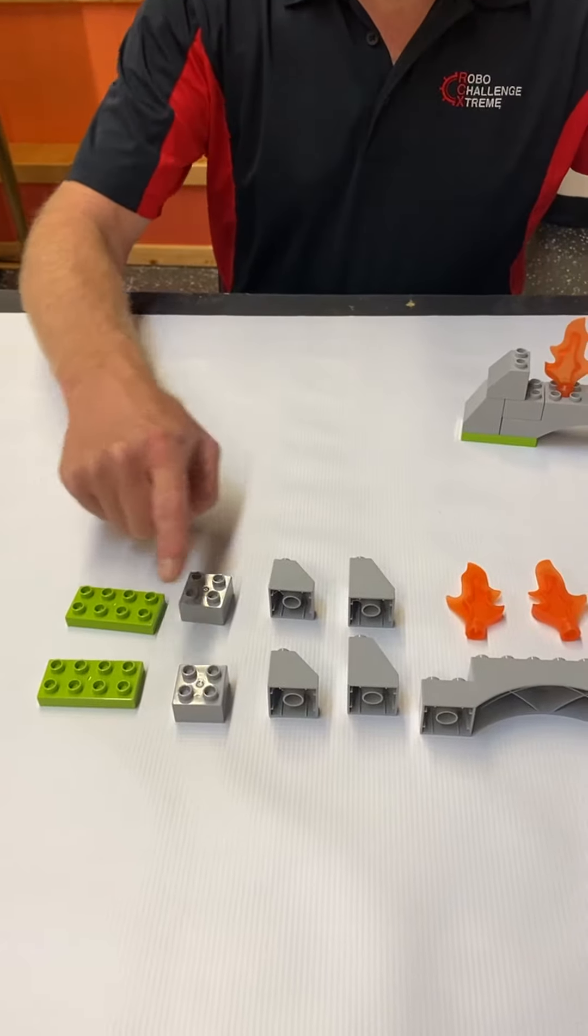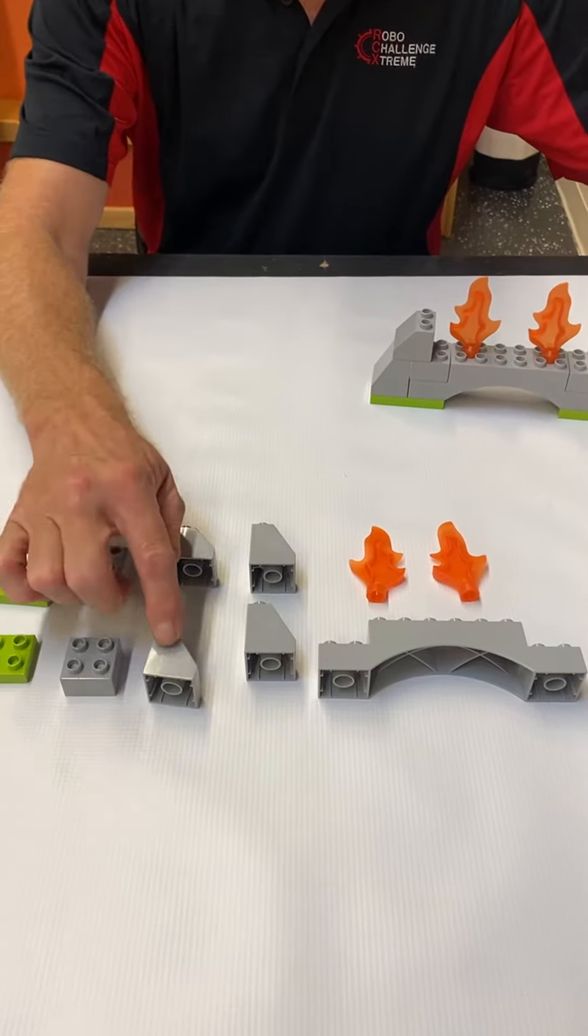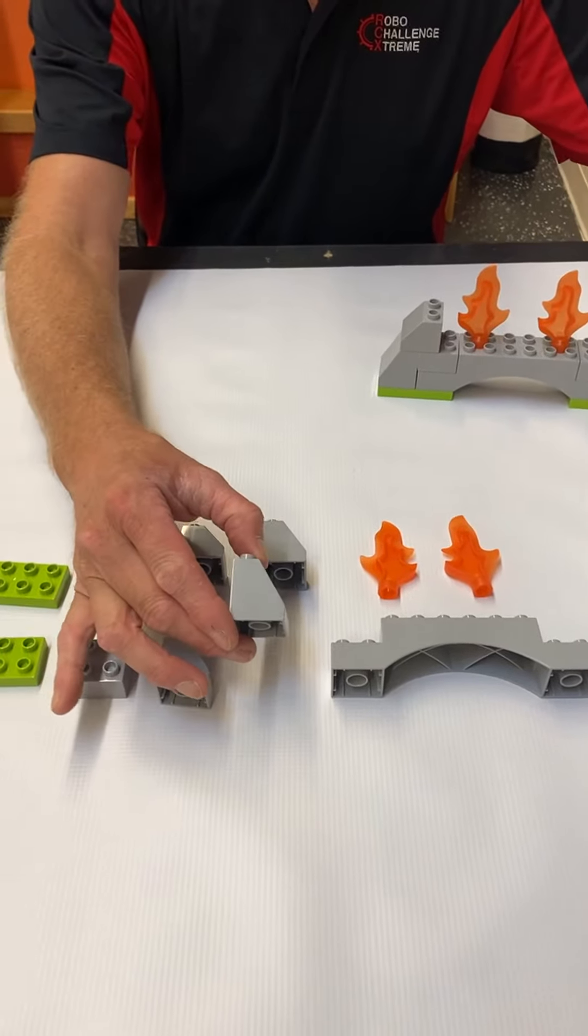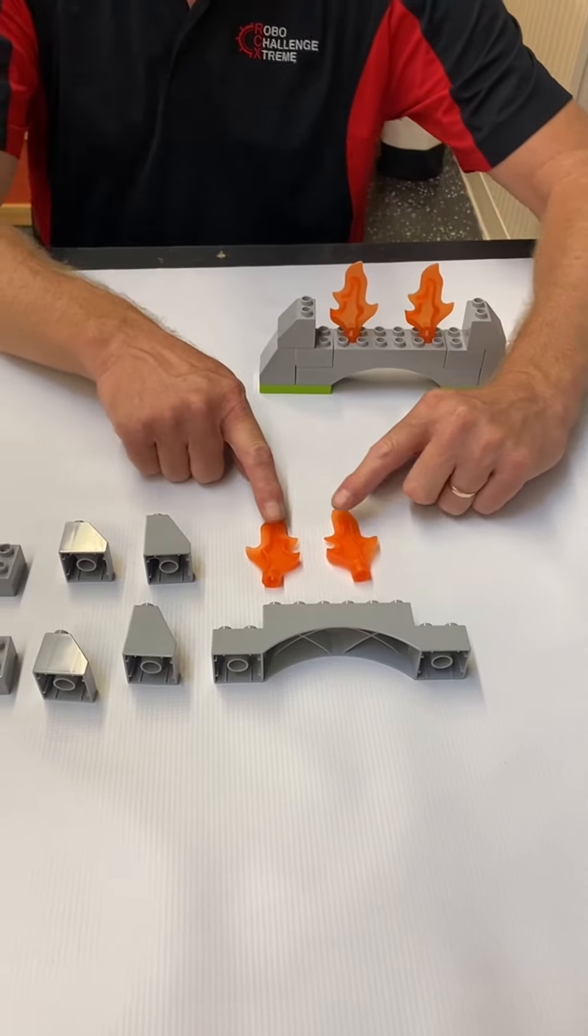The pieces include: 2x4 plates, 2x2 bricks, 2x2 two-tall roof pieces, 2x2 three-tall roof pieces, an archway, and two flames.